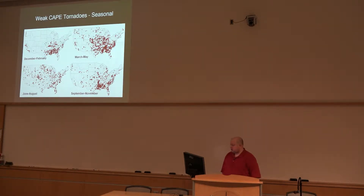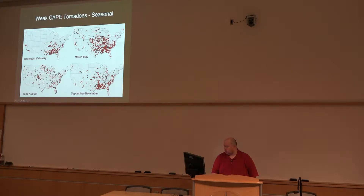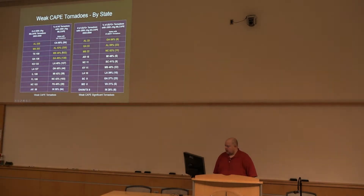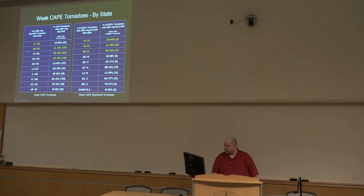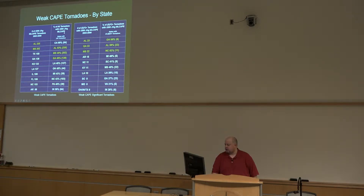Here's a seasonal distribution — the December through February timeframe is most common or concentrated in the southeast United States. There are some other tornadoes the rest of the year that appear to be associated with weak CAPE. A state-by-state breakdown shows the signal for the southeast part of the United States clearly. Looking at Alabama, Mississippi, and Georgia, roughly around half of their tornadoes were associated with ML CAPE of 500 joules per kilogram or less.